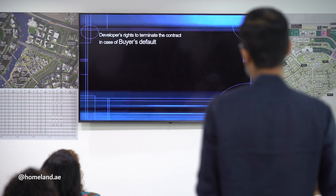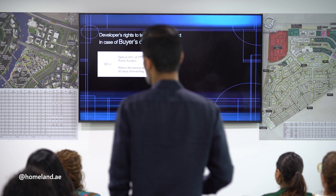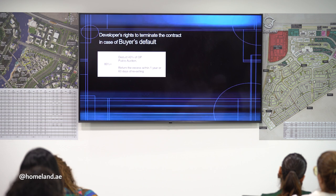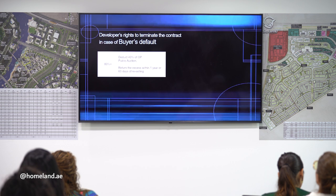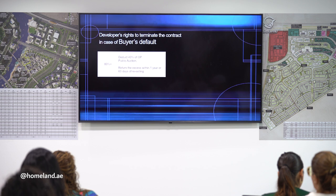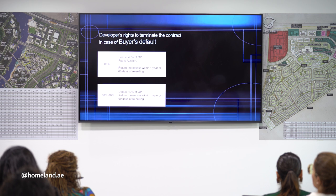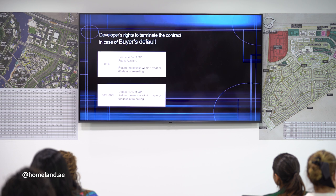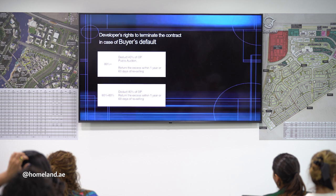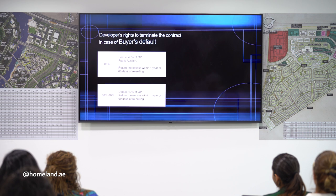Regarding the developer's right to terminate the contract: buyer's default means not paying. If the project construction is more than 80%, the developer has the right to deduct 40% of the original price. The unit goes to public auction and the balance is returned to the client by Dubai Land Department within one year from the date of termination or 60 days of selling the same unit. If construction progress is between 60–80%, the client also loses 40%, but it doesn't have to go to public auction; the balance is returned within one year or two months from the date the unit is sold to another client.